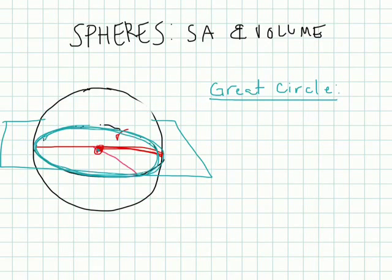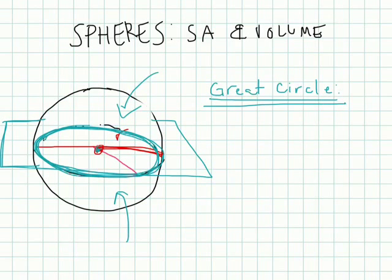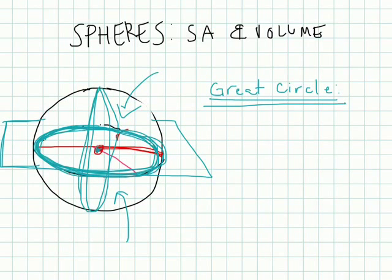If we bring planes down at various levels, eventually we'll be halfway, and halfway gives us the greatest — the biggest circle we can make — the great circle. The great circle passes through the center and divides the sphere into two halves. Each half is called a hemisphere. Also, this great circle is the circumference — it's the longest circle around the sphere. The plane could also come vertically and create another great circle.